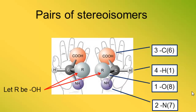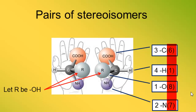The number assignment to each group is not chosen at random. It is based on the atomic number of the atom bonded to the stereocenter. The OH group is assigned number one because oxygen, which is bonded to the stereocenter, has an atomic number of eight — the highest of all atoms bonded to the stereocenter. The amine group is assigned number two because nitrogen has an atomic number of seven. The carboxylic acid group is assigned number three because the carbon bonded to the stereocenter has an atomic number of six. And hydrogen is assigned number four because hydrogen has an atomic number of one.